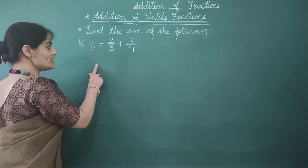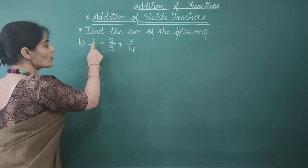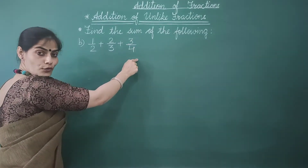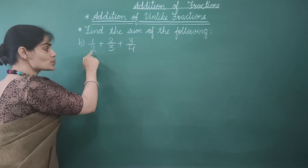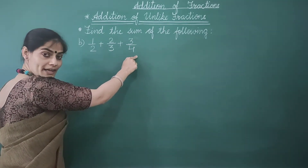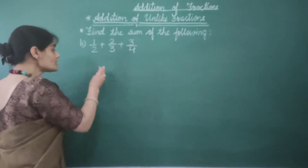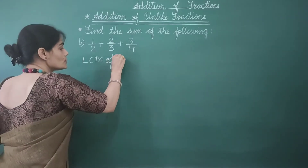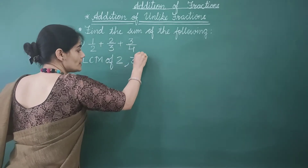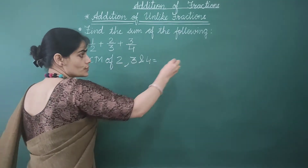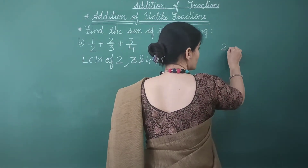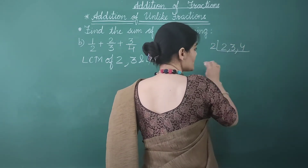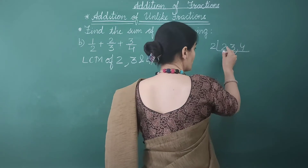In part B, we are asked to find the sum of 1 by 2, 2 by 3, and 3 by 4. We observe that all these are unlike fractions. So we first have to find the LCM of 2, 3, and 4. I write 2, 3, and 4 and begin with 2 since we have even numbers.